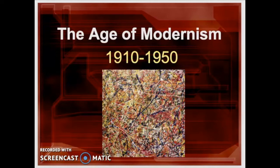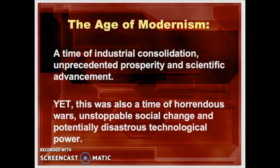Welcome to this session on the Age of Modernism, which we're going to say lasted from 1910 to about 1950. You'll notice that piece of art up there called Abstract Expressionism, done by Jackson Pollock, which is pretty iconic for this era. The Age of Modernism saw the expansion and consolidation and universalization of industrial output and industrial processes — basically the whole industrial orientation of Western society. It was also a time of unprecedented prosperity, scientific advancement, horrendous wars, unstoppable social change, and potentially disastrous technological power, especially the invention of nuclear weapons.